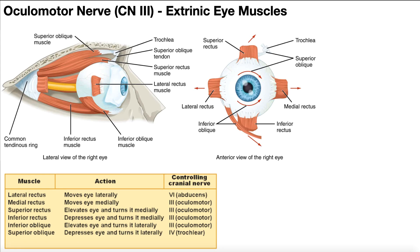Now out of these six extrinsic eye muscles, four of them are innervated by the oculomotor nerve. The first one is the medial rectus muscle, which moves the eye medially towards the nose. And there's the superior rectus muscle on top, which elevates the eye and turns it slightly medially.